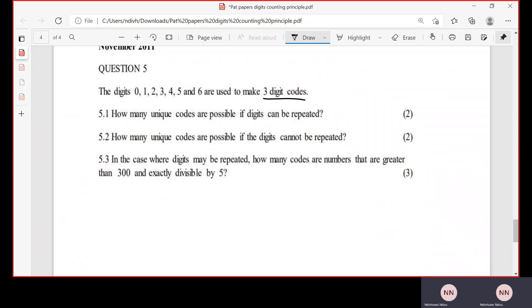codes are possible if the digits can be repeated? So we want to form a three-digit code. How many unique codes can be formed if the digits can be repeated? We know that in counting principle, we only include the number of choices that we have in a particular situation.